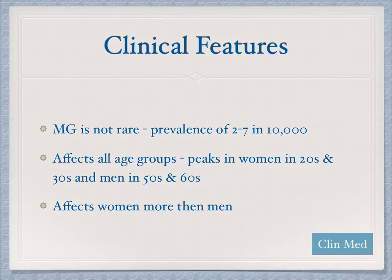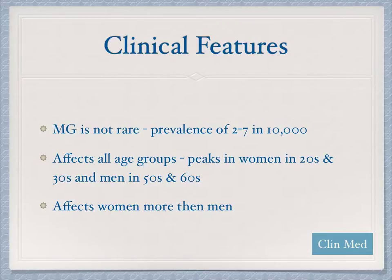Moving on to epidemiology: this disease is not rare. Prevalence is about 2 to 7 people out of 10,000. It can affect anybody of any age group, but tends to peak in women in their 20s and men in their 50s and 60s. The disease is more commonly seen in women than men.